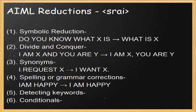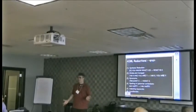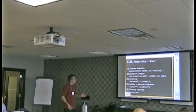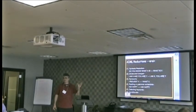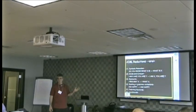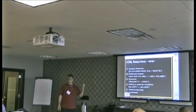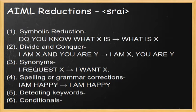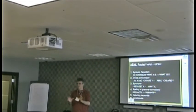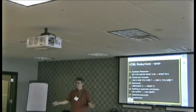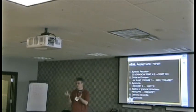The AIML language includes an operator called SRAI — the Symbolic Reduction Operator — which has several applications. One is transforming complex forms of inputs into simpler forms: if the input is 'do you know what X is?', SRAI transforms it to the simpler form 'what is X?', and the same answer can be reused. Another application is divide and conquer, where a compound input sentence is broken down into parts, each part answered separately and the results combined.